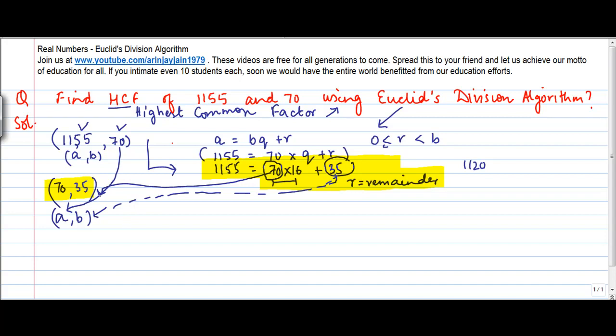So now you have to write 70 and 35 in such a manner that you satisfy this Euclid's theorem: a equals bq plus r. 70 equals 35 times 2 plus 0. I know if I multiply 35 by 2, I will get 70, so therefore r equals 0.